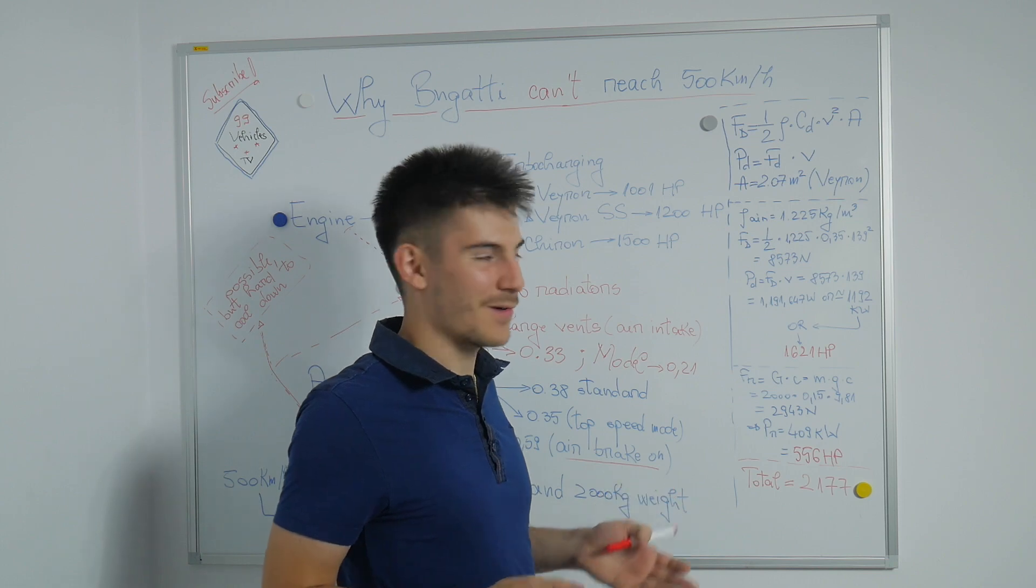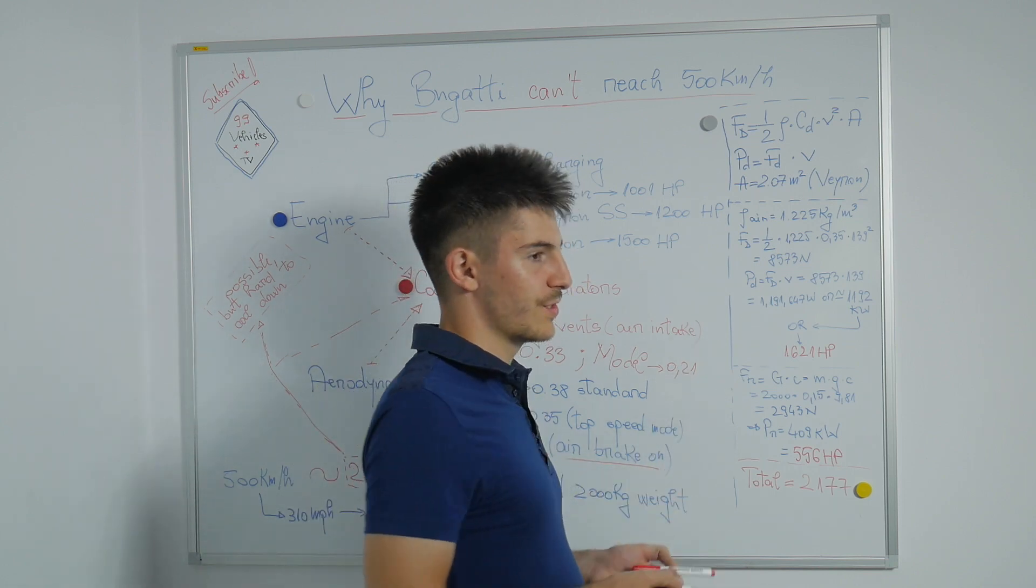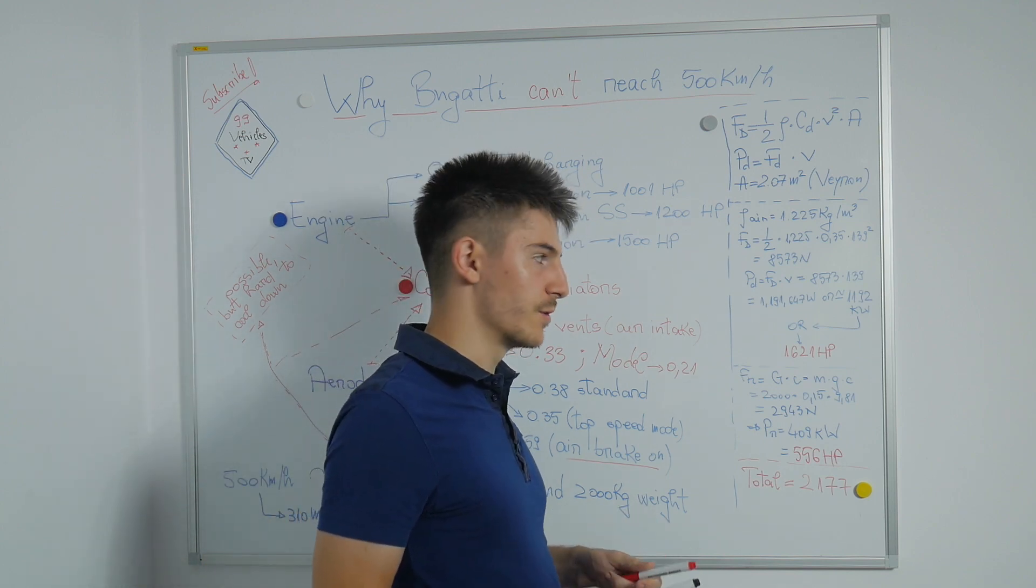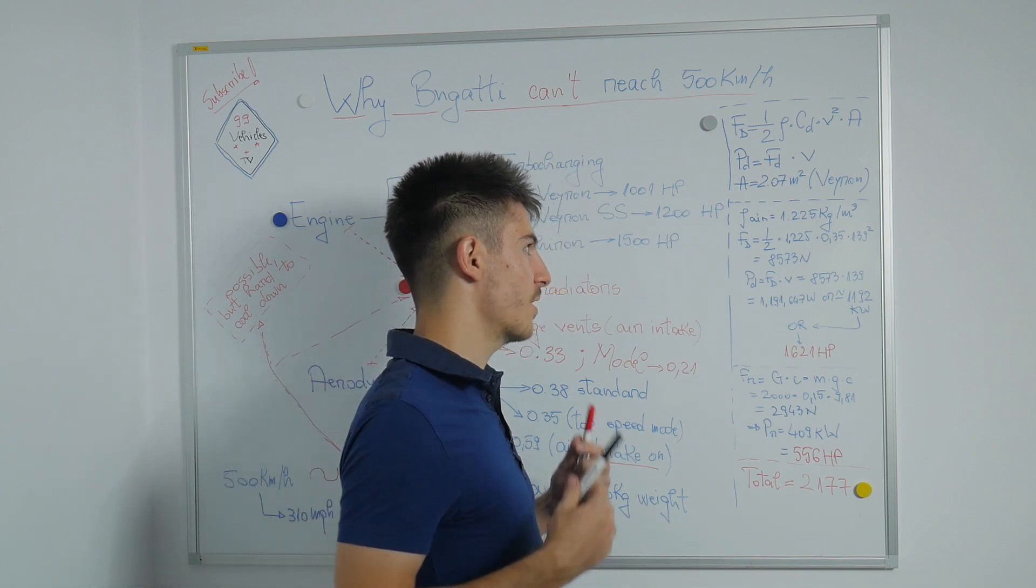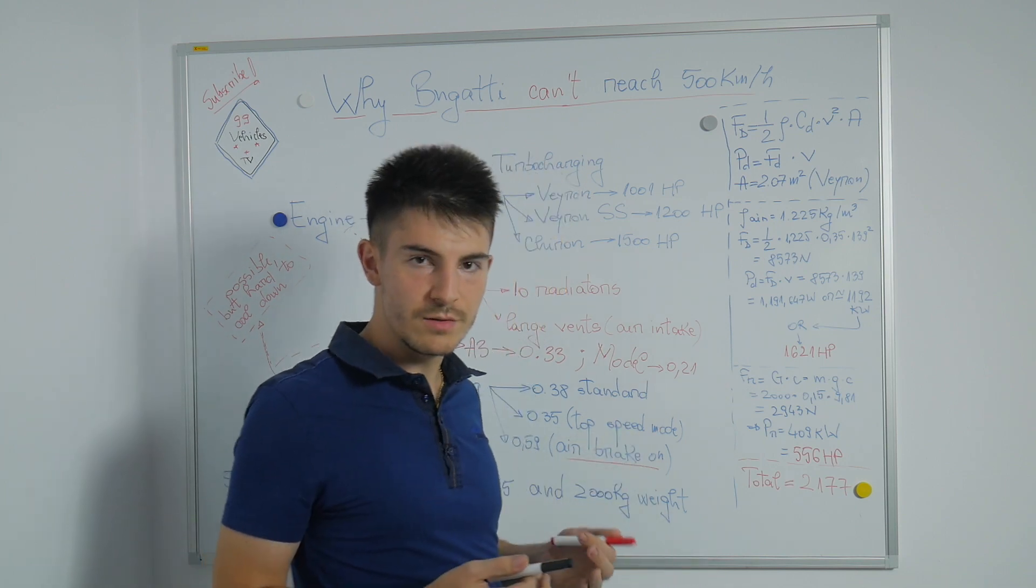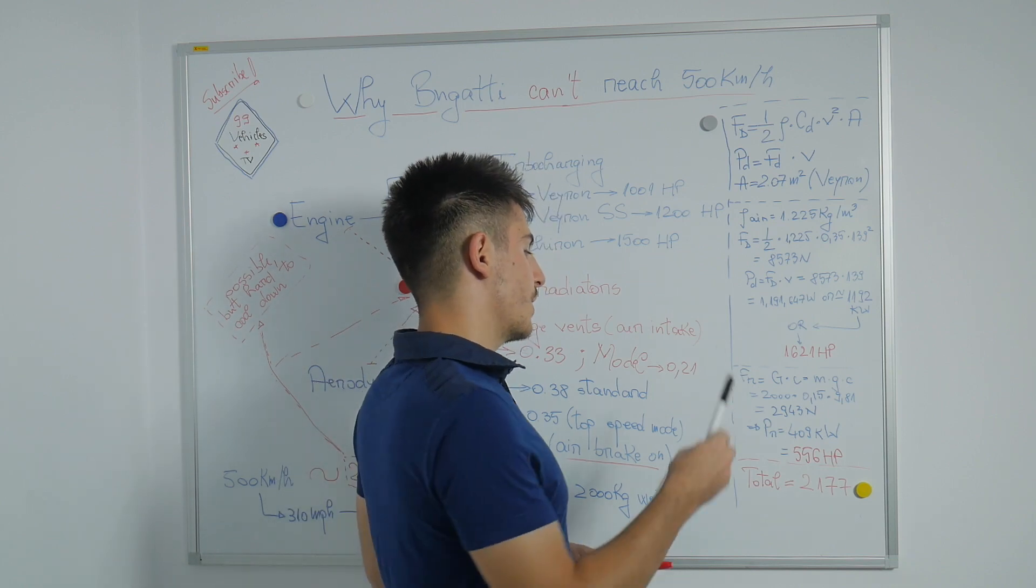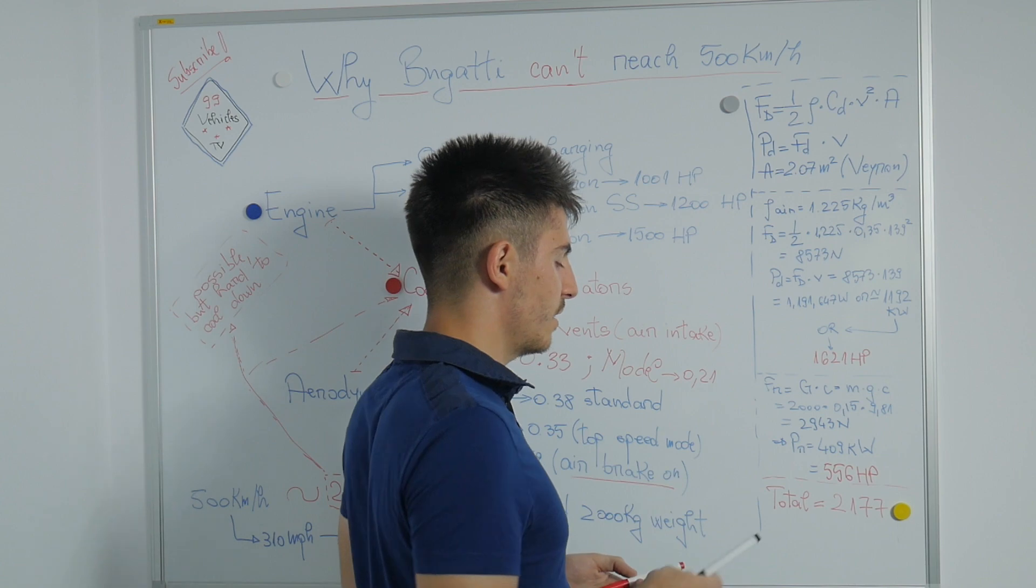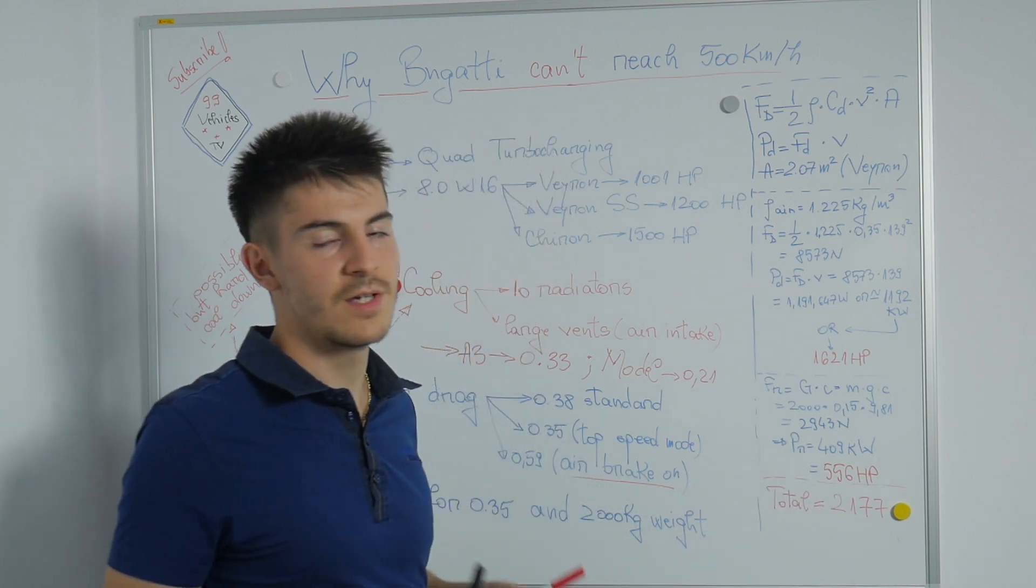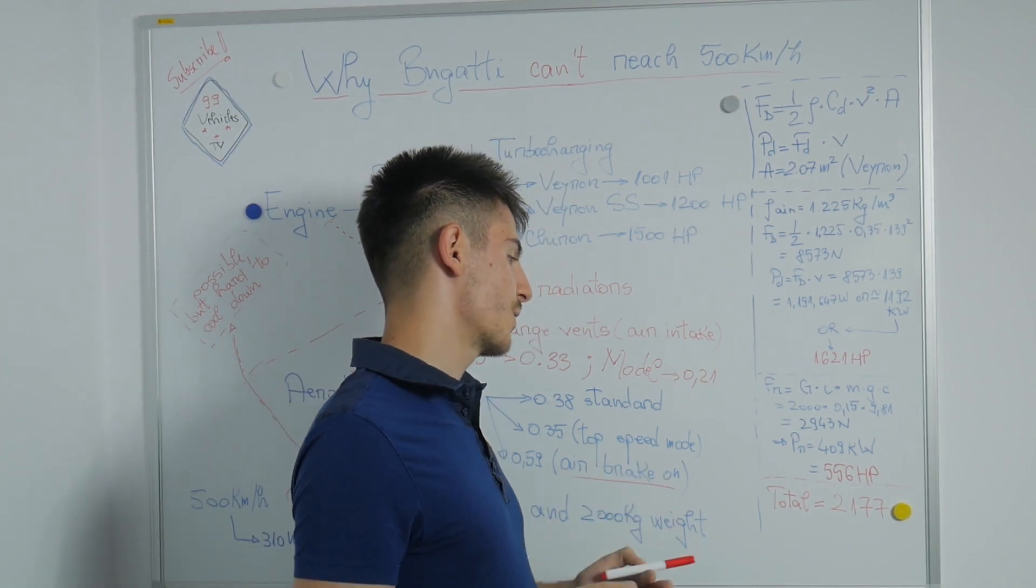Also, we have rolling resistance forces, or the forces which act on the wheels on the ground. We don't have just aerodynamic drag forces; we also have the wheels in contact with the ground, so we have other friction forces there as well. We need 556 horsepower just to surpass those friction forces from the ground, the rolling resistance forces.